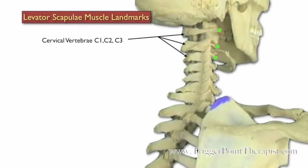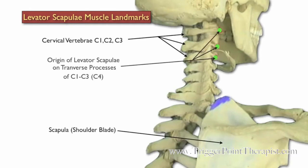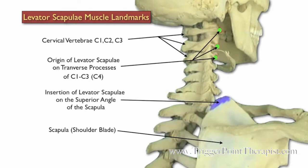Here are the landmarks for the Levator Scapula. First we have the cervical vertebrae and the scapula. The origin of the Levator Scapula is on the transverse processes of C1 through C3, and sometimes C4. It inserts on the superior angle of the scapula.